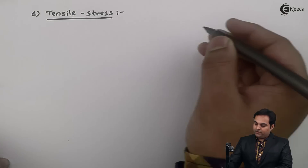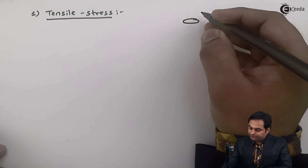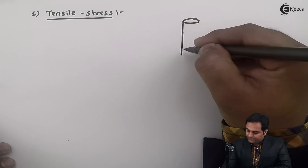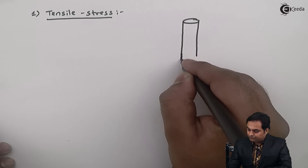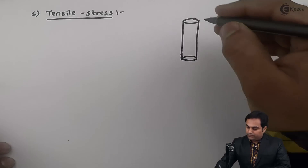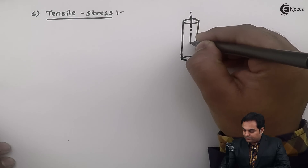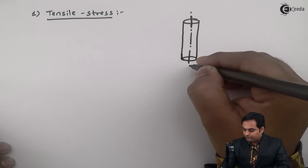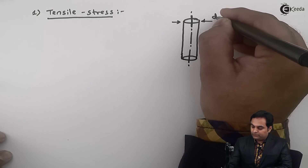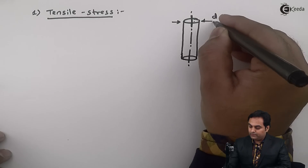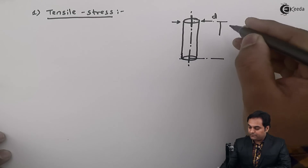For tensile stress, I'll draw a diagram. In this diagram I am drawing a rod. Here I have the axis of the rod. Let me say that d is the diameter of the rod and its length is L.